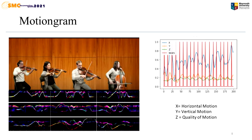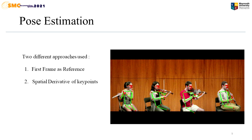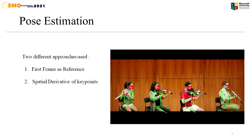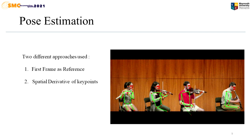In the slide, you can see the diagram where we show the relationship between X, Y, and Z signals and the location of the musical beats. The number of signals in the motiongram is always independent of the number of participants in the video. For pose estimation, we used a library called OpenPose, an improved and robust model for pose estimation that applies part affinity fields to predict the key points for multiple humans. Two different approaches were tested for pose estimation: the first frame as reference, and spatial derivative of key points.